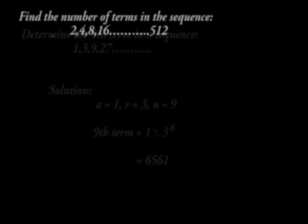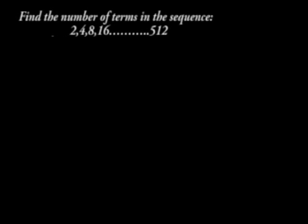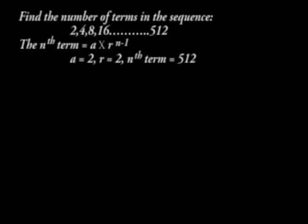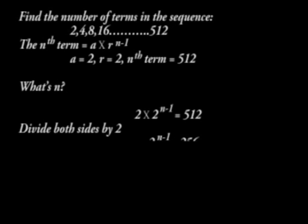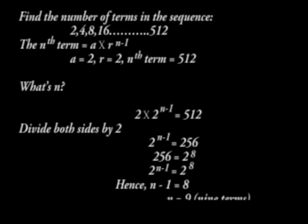Example 2, find the number of terms in the sequence 2, 4, 8, up to 512. The Nth term is given by A times R raised to power N. A is 2, R is 2, and Nth term is 512. What then is N? Therefore, we have 2 times 2 raised to power N minus 1 is 512. If we divide both sides by 2, we shall have 2 raised to power N minus 1 is 256. And therefore, we can have 256 is 2 to power 8. Equating the powers, we have N minus 1 is equal to 8, and therefore N is 9. Therefore, we have 9 terms in the sequence.